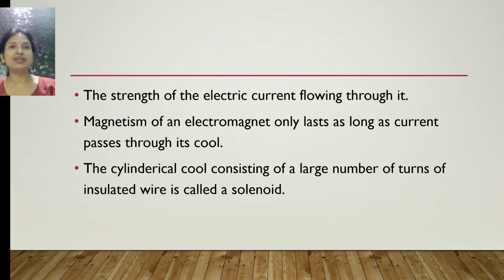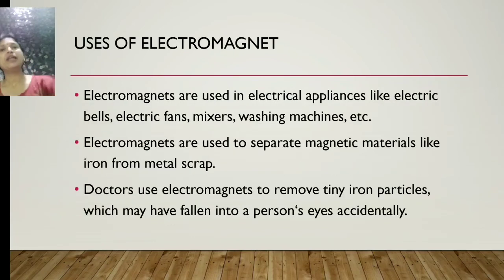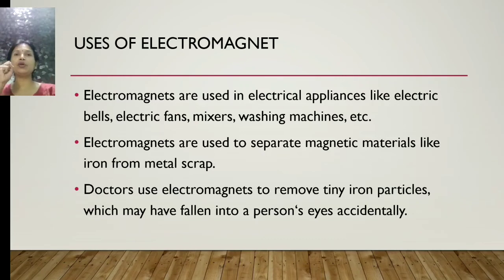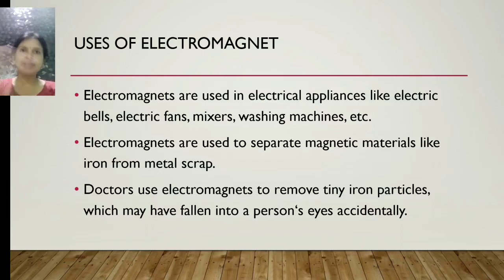A cylindrical coil consisting of a large number of turns of insulated wire is called a solenoid. Now we will move towards the uses of the electromagnet. To produce a temporary magnet, we wind electric wire around an iron rod and pass electricity through it, forming an electromagnet.